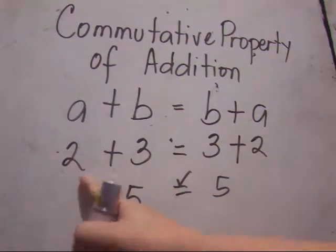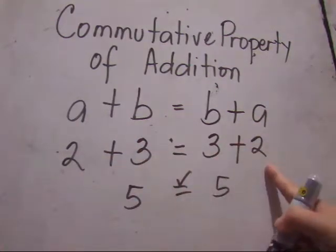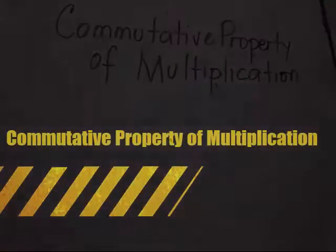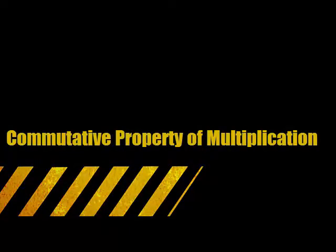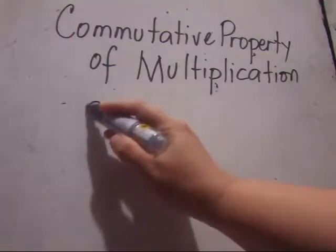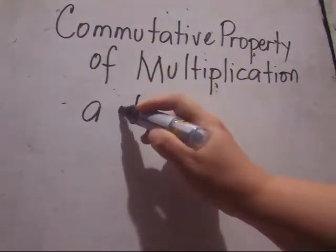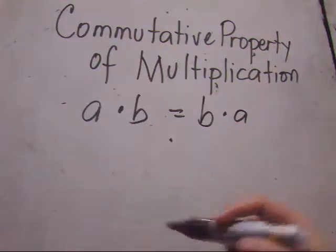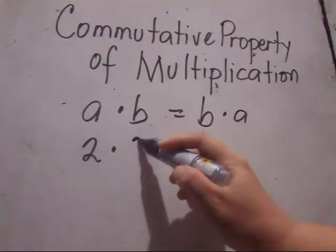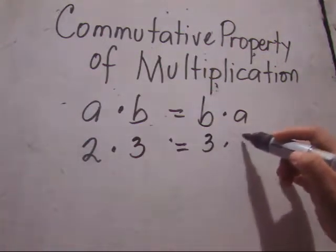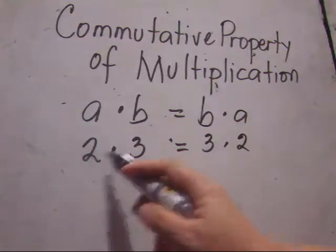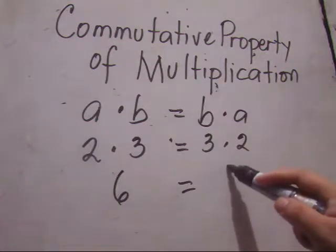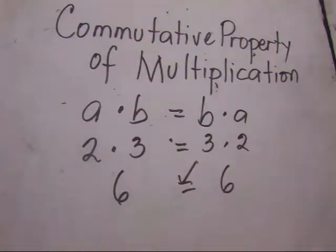So even if I interchange 2 and 3, the answer will still be 5. The next property is the commutative property of multiplication. Just like in addition, it means that A times B is also equal to B times A. For example, 2 times 3 is equal to 3 times 2. Let's solve: 2 times 3 is equal to 6, and 3 times 2 is equal to 6. So they have the same answer.